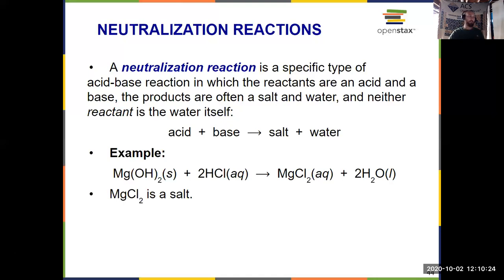So that is your second type major category that you're expected to identify. Precipitation was number one. Here, acid-base is number two, which is why you need to know that HCl is an acid. Magnesium hydroxide. It's got hydroxide. I know that's a base. Making a salt and water. Neutralization. Piece of cake.